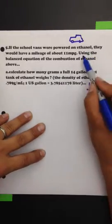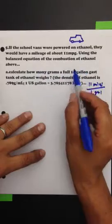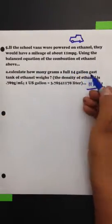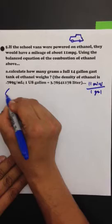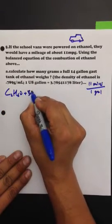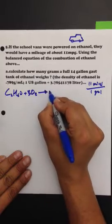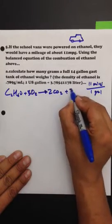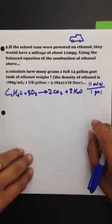Interesting fact. Anyway, using the balanced equation of the combustion of ethanol above, which I have, and I'm going to write down quickly, C2H6O plus 3O2 react to 2CO2 plus 3H2O. Very nice.